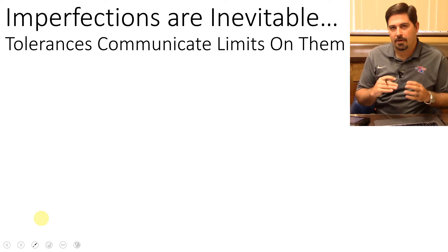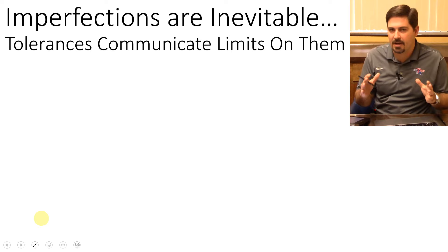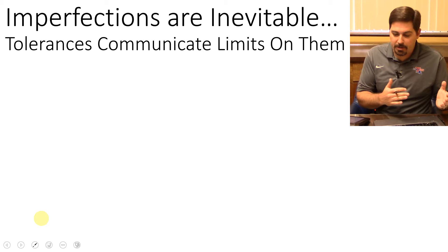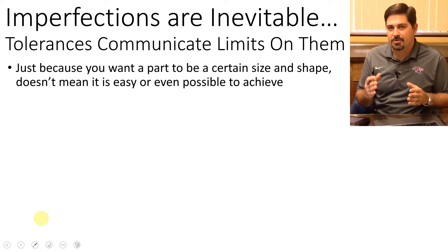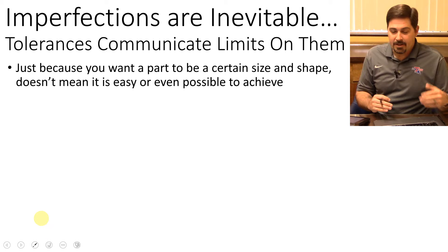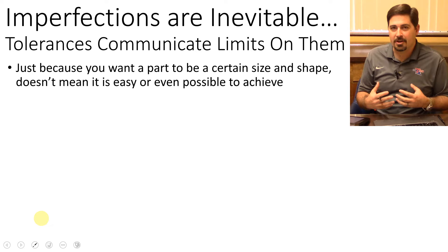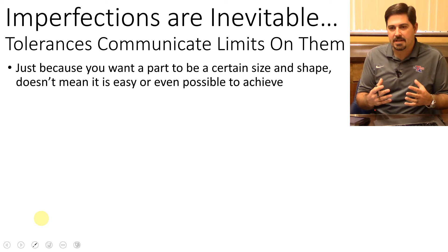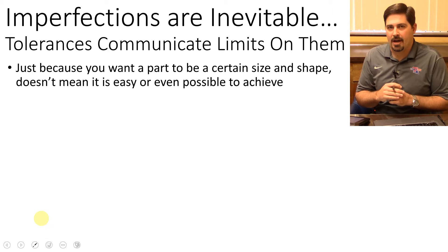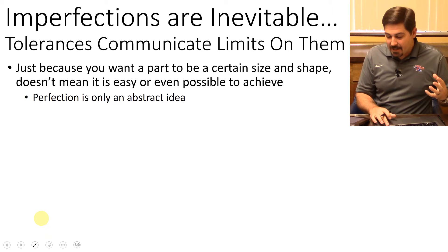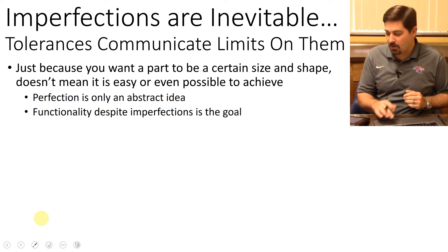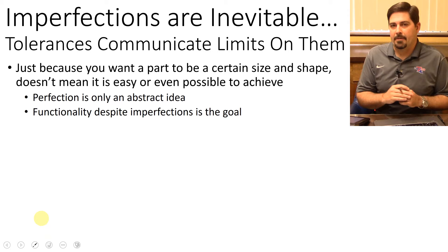Nothing made in the real world is ever made perfectly. Imperfections are going to happen no matter what we make — there can be bigger or smaller imperfections, but we'll never eliminate them entirely. Just because you want something to be a certain size and shape doesn't mean you'll get that once you've sent it to be made. Trying to make things yourself is a great way to learn about tolerancing because you learn how hard it is to make something exactly as intended.